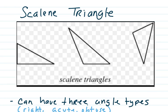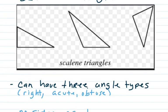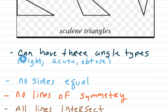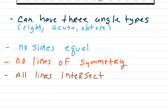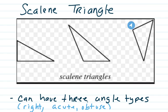And then our last type of triangle is a scalene triangle. So make sure you draw all of these pictures in your notebook. They can have three acute angles, they can have three angle types: right, acute, and obtuse. None of the sides are equal, they will have no lines of symmetry, and all of the lines will intersect. And so that is the end of our lesson on triangles.